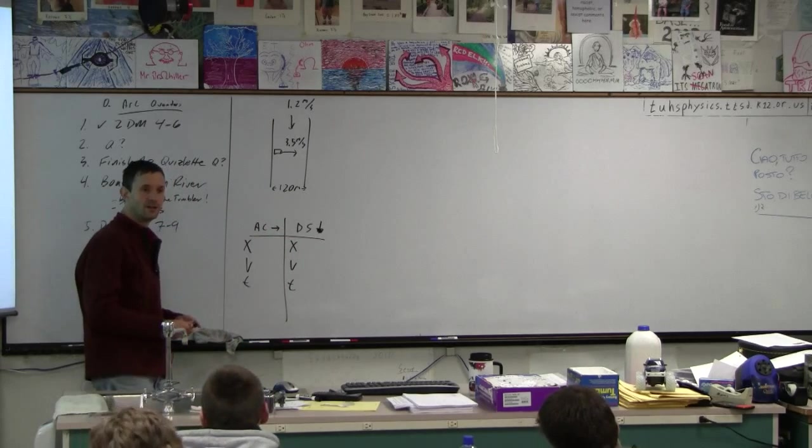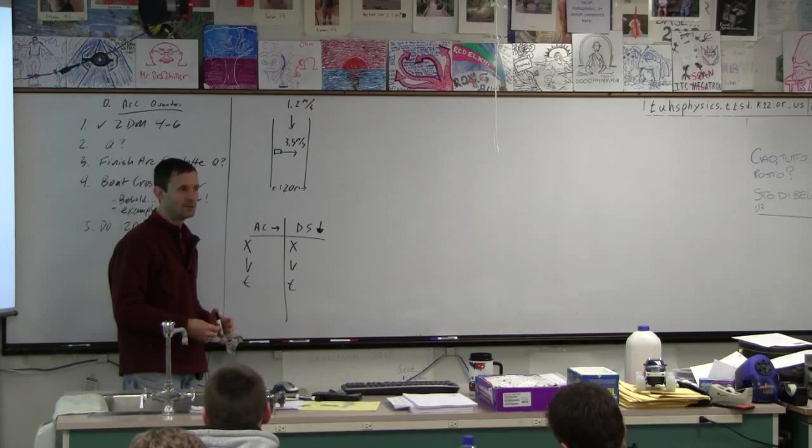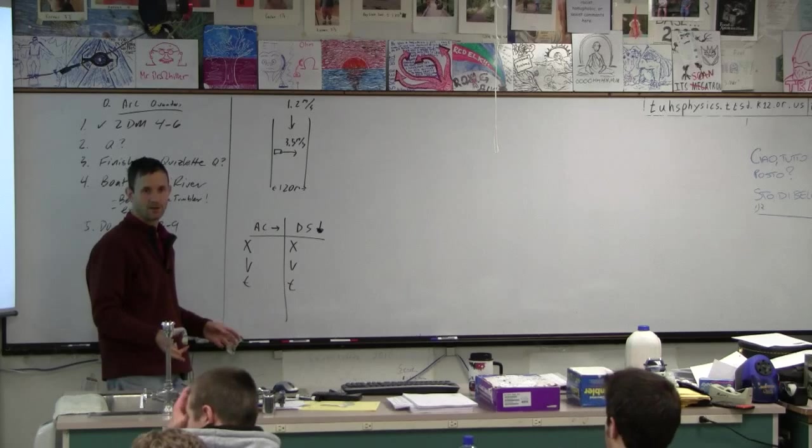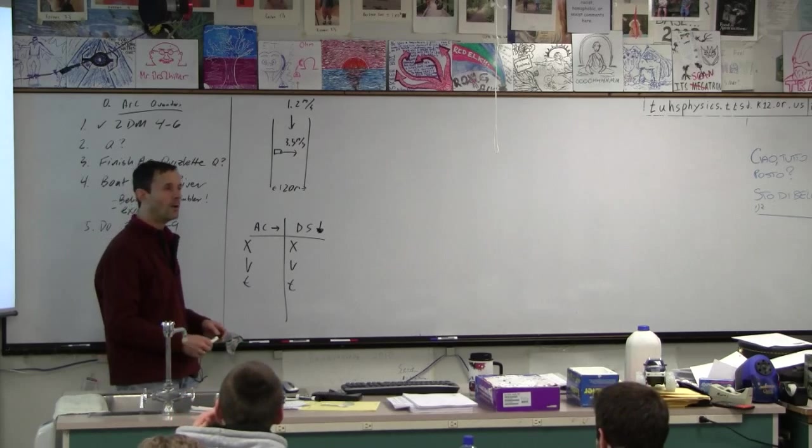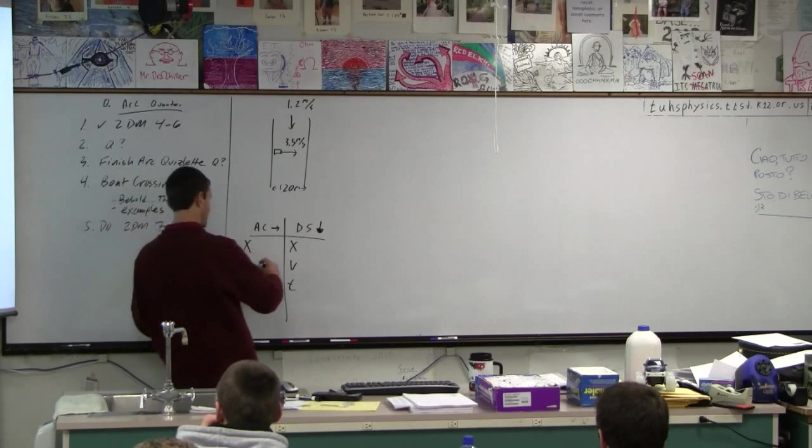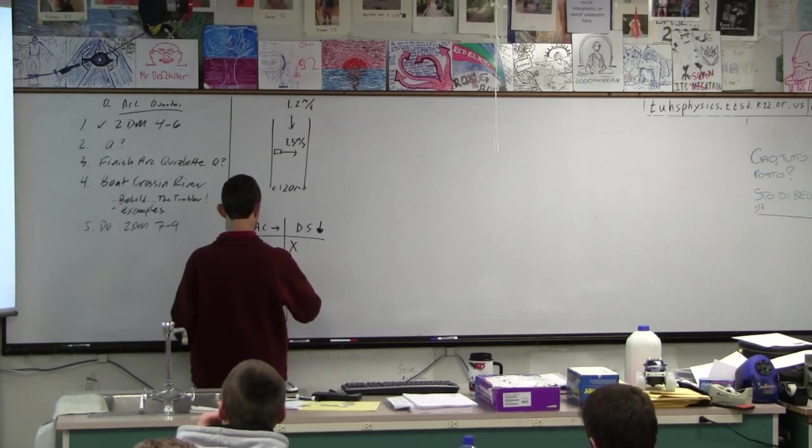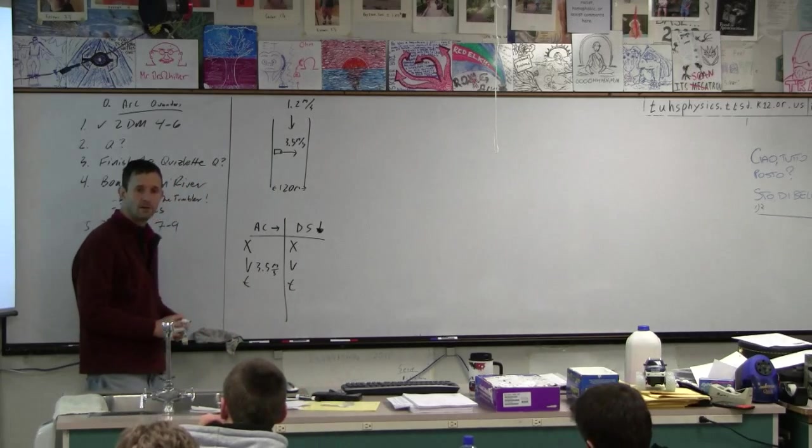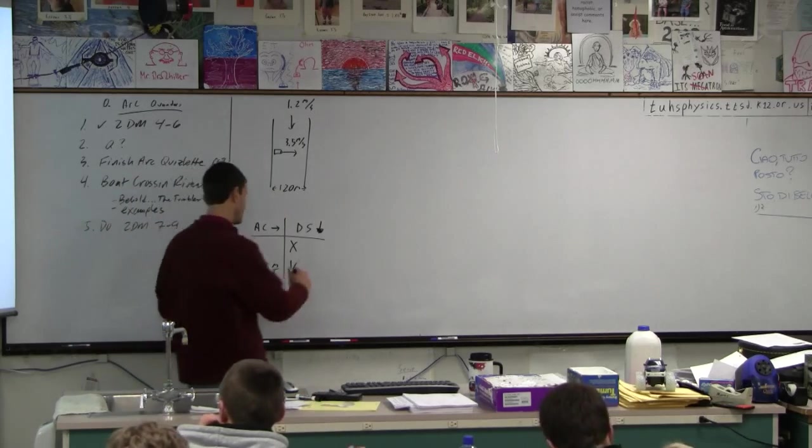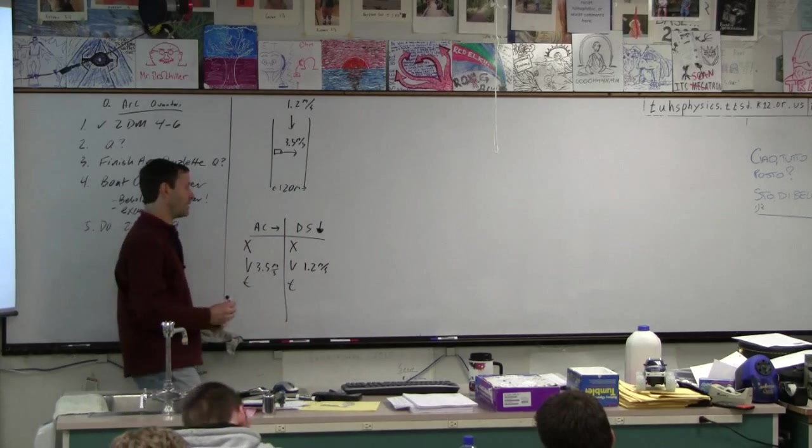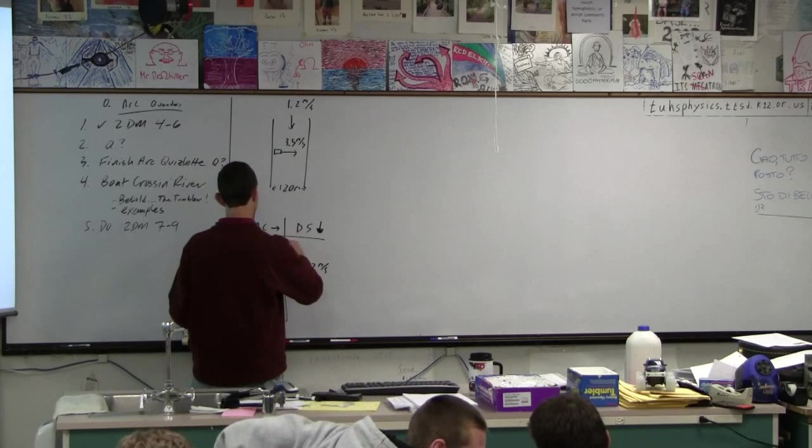There's no acceleration. This is so much easier than projectile motion. No initial final velocity, no acceleration. So what do we know? Across velocity, 3.5 is the across velocity. Because it's pointed straight across, all of that is across. 1.2 is our downstream velocity. And then 120, there we go.